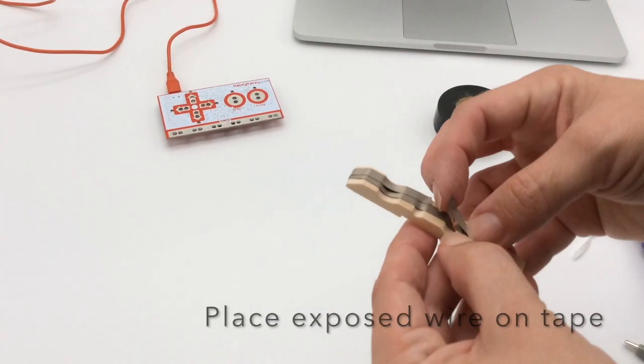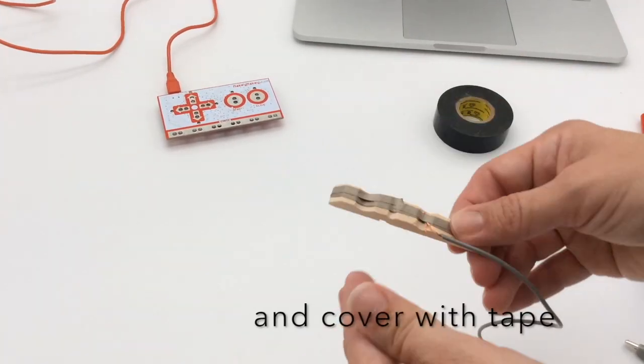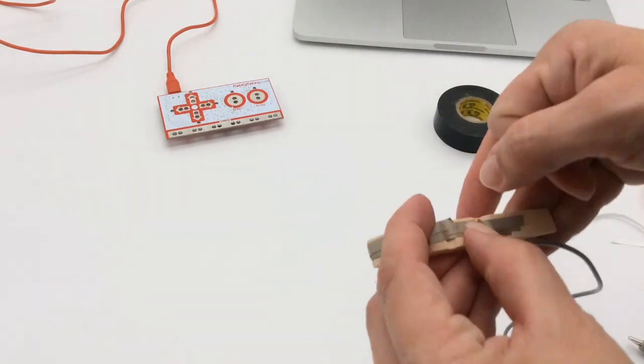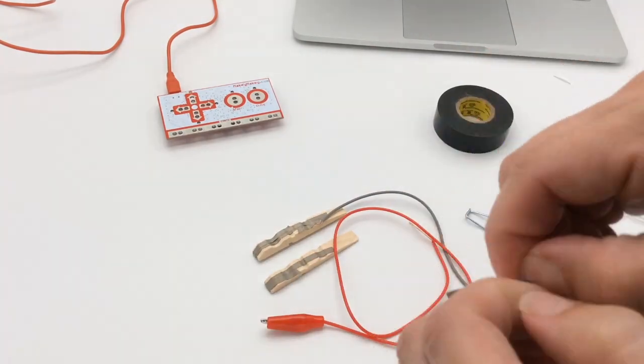Take that exposed wire and put it on top of the tape, then cover with more conductive fabric tape. Do the same thing for both sides.